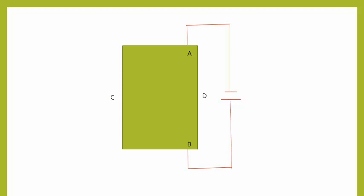On your screen, you can see a rectangular box. This box represents a conductor piece or semiconductor piece. We can label the sides of this metal piece as A, B, C, and D. When electric potential is applied between end A and side B, an electronic current will start flowing in this conductor piece. This arrow represents the electric current flowing in this conductor piece, and these dots represent the direction of flowing electrons.